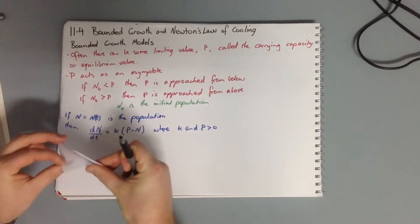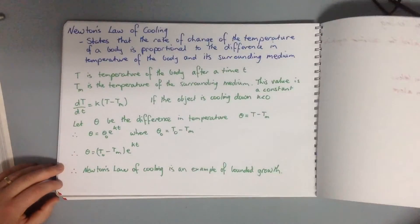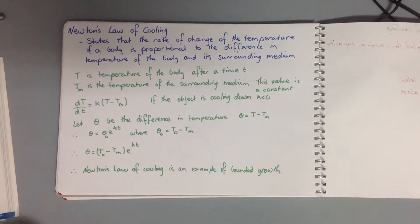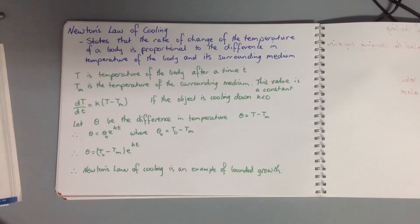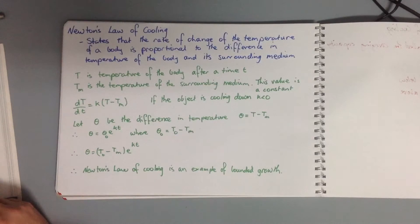Newton's law of cooling is just an example of bounded growth. It states that the rate of change of the temperature of a body is proportional to the difference in temperature of the body and its surrounding medium. T is the temperature of the body after a time T in minutes.